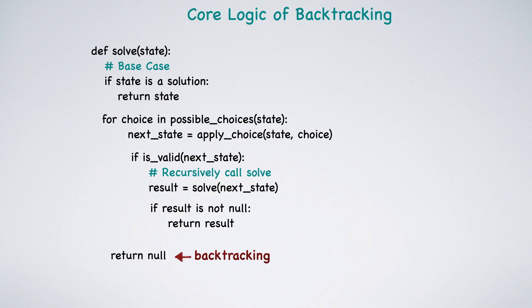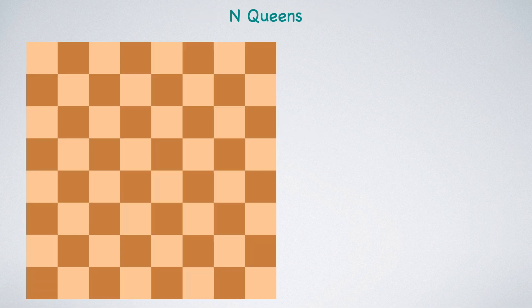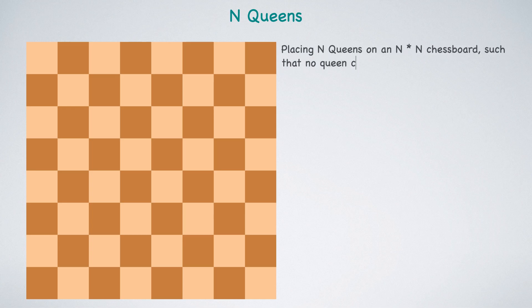Now, let's delve into the classic N queens puzzle and demonstrate how this core logic can be applied to solve it. The N queens puzzle requires placing N queens on an N by N chessboard in such a way that no queen can attack or threaten each other. This problem is a classic example of backtracking and, in my view, crucial for anyone aiming to understand backtracking.